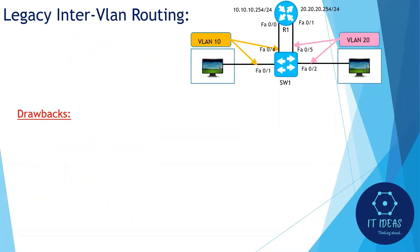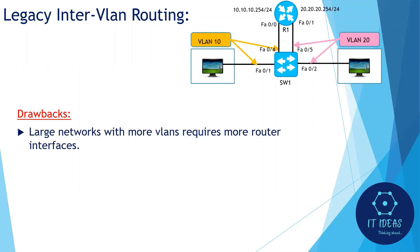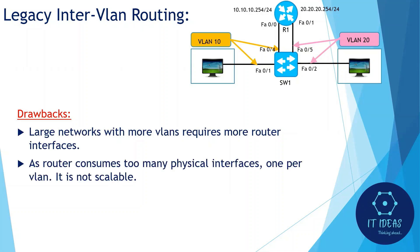The connectivity test is working successfully. However, this legacy inter-VLAN routing has some drawbacks. Large networks with more VLANs require more router interfaces, as the router consumes one physical interface per VLAN. It is not scalable, so it is typically not used.